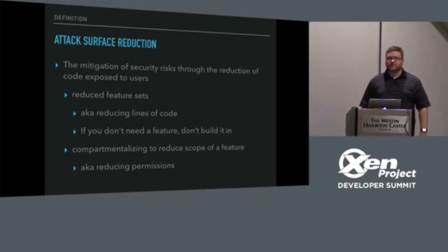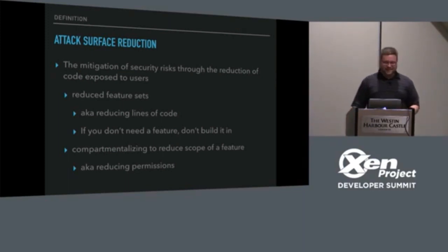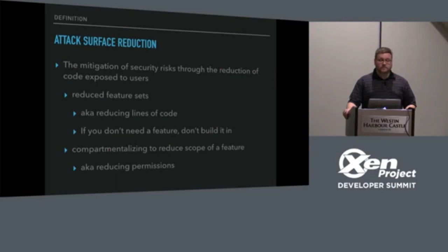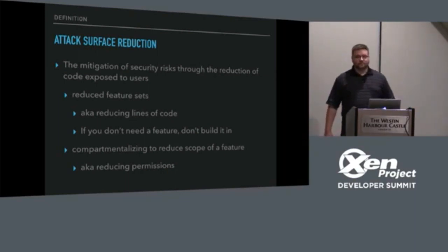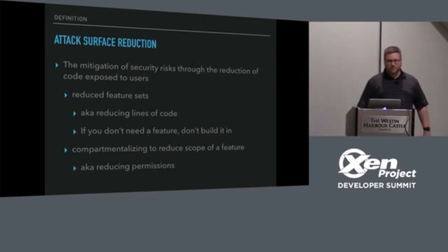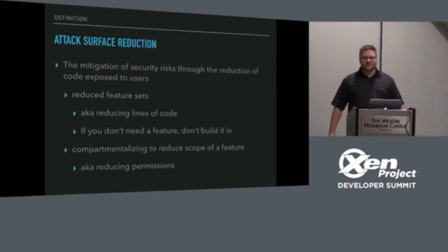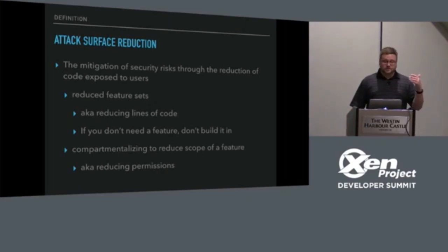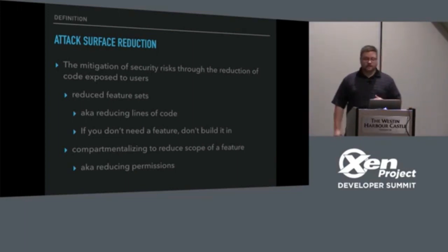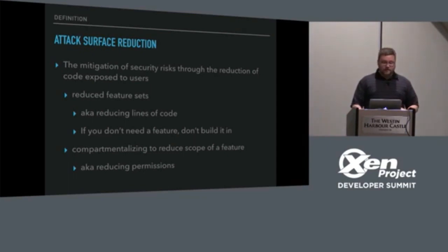What is attack surface reduction? It's the mitigation of security risks through the reduction of code exposed to users. Reduce the feature set, which is reduce the lines of code — but intelligently reduce the lines of code. A lot of times people just take lines of code as a raw metric and it's really not. At the end of the day, if you don't need the feature, don't build it in. And then reduce permissions.